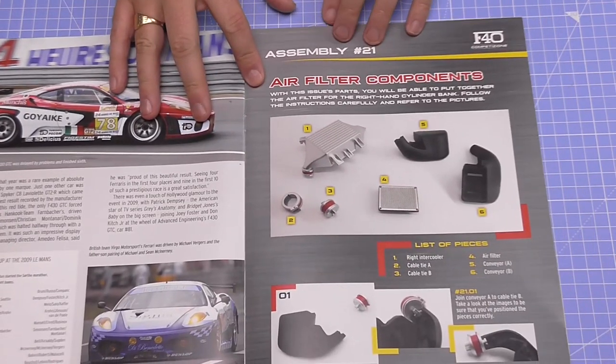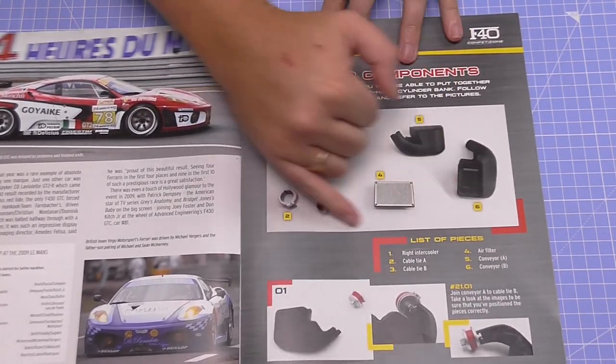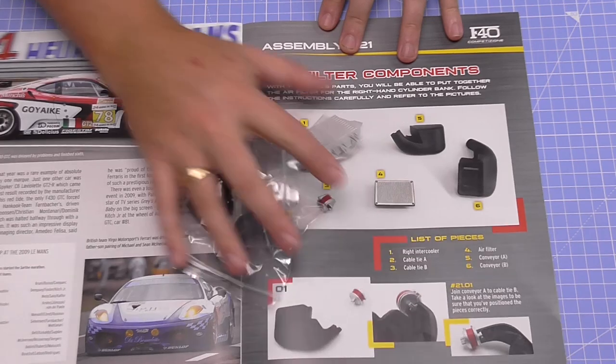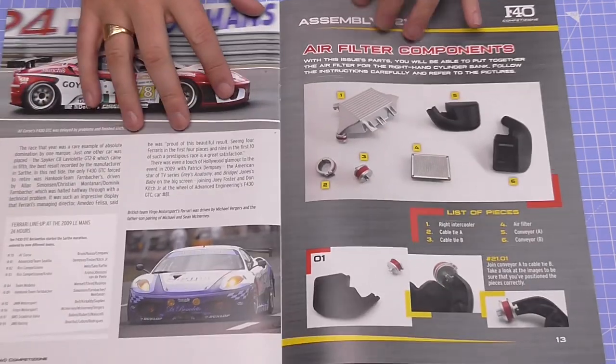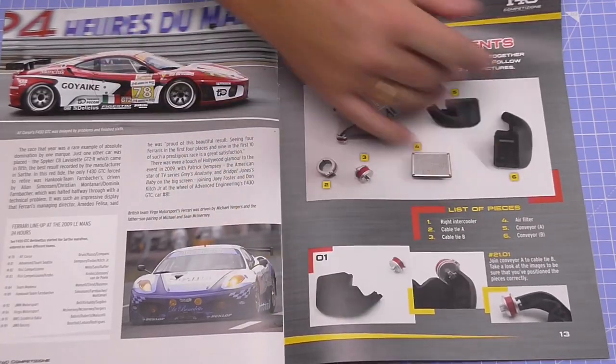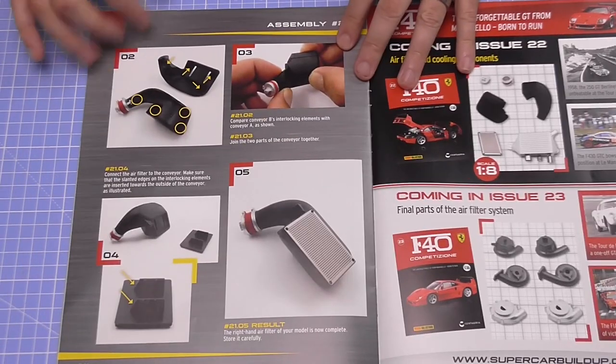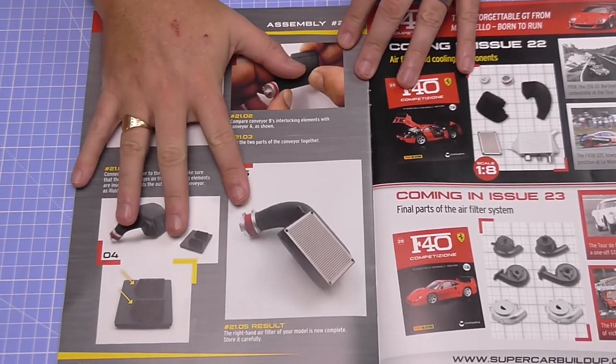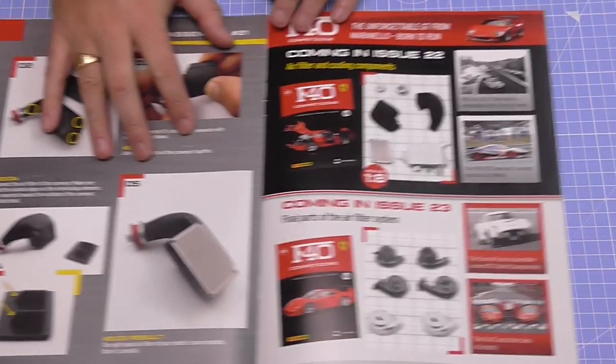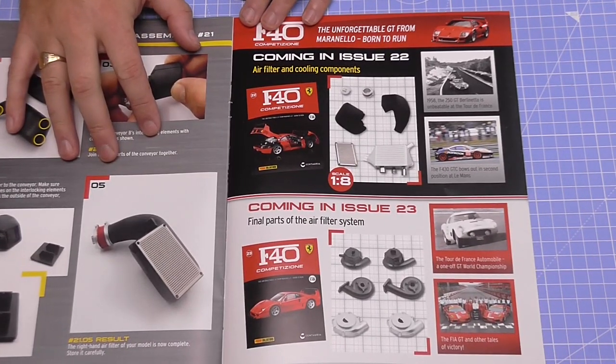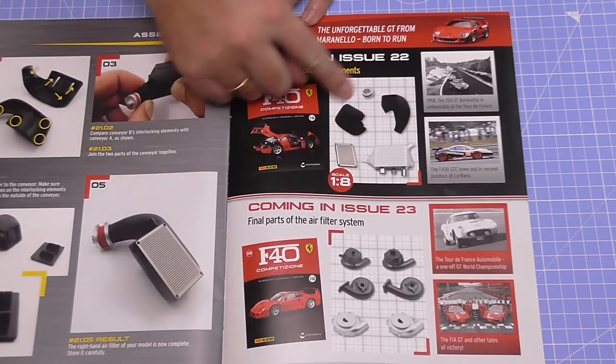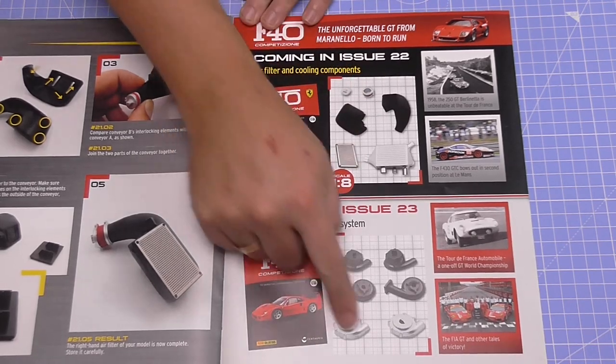All we're going to be doing today is the air filter components. This is all we've got. I've already opened the bag. We don't need anything else, even though I have put the engine nicely on its own plinth there. We're going to put all this stuff into place so at the end we have a working air cooler. That's all there is to do in this stage today. Coming in issue 22, we've got the air filter and cooling components, and then the final parts of the air filter system. So the next two parts are going to be working on the air filter system.